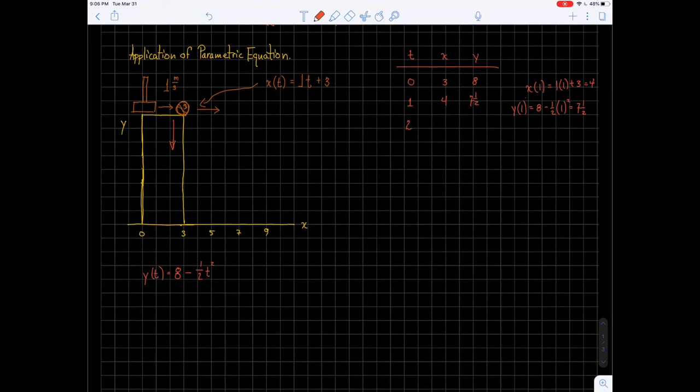So what about two seconds passed? Well, x has moved over one more unit to 5. But this time, if we put in a 2, so y of 2 is going to be 8 minus 1 half times 2 squared, which is 4. 4 times 1 half is 2. 8 minus 2, that's 6.